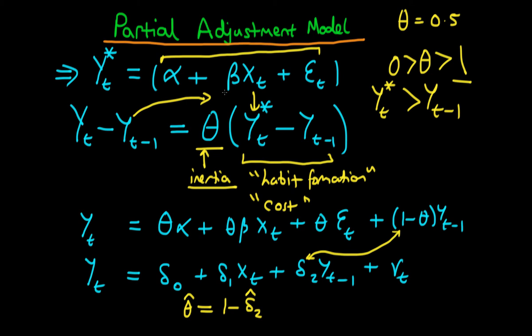And how do we get the structural parameter beta? Well, that's easy. If we've already calculated our estimate of theta, theta hat, then our estimate of beta, beta hat, equals delta one hat divided by theta hat. That's easy to see if you just compare the coefficients on xt.